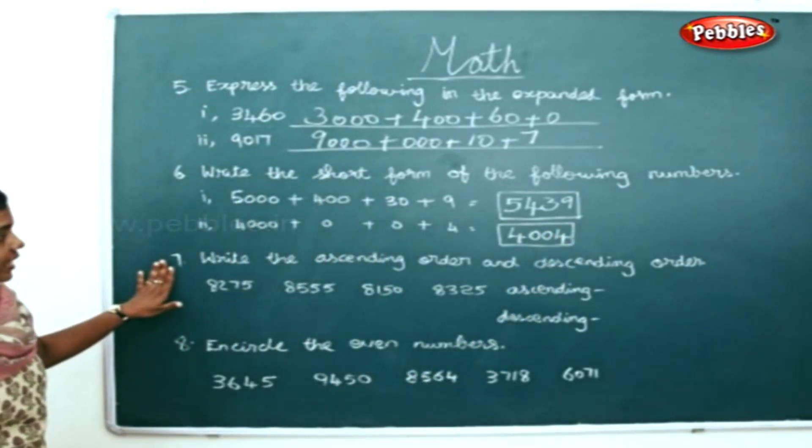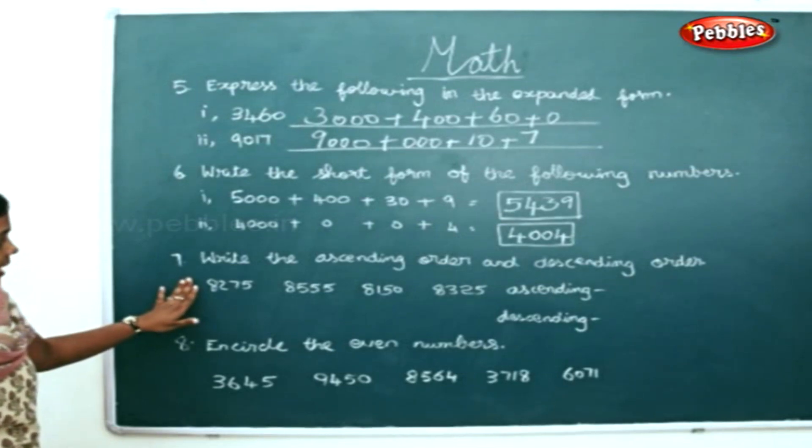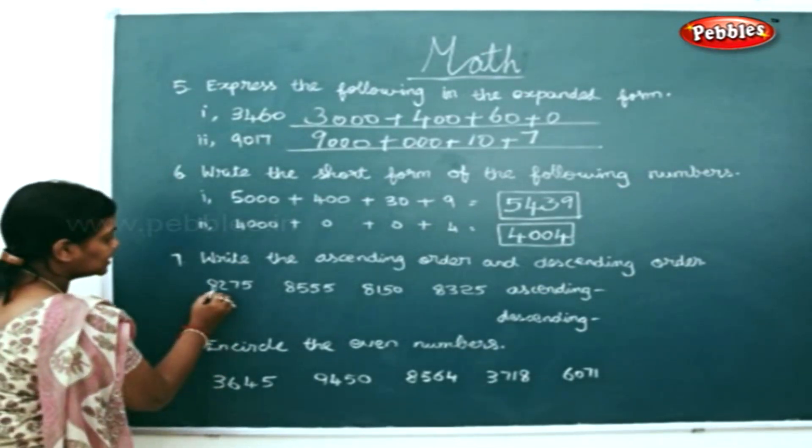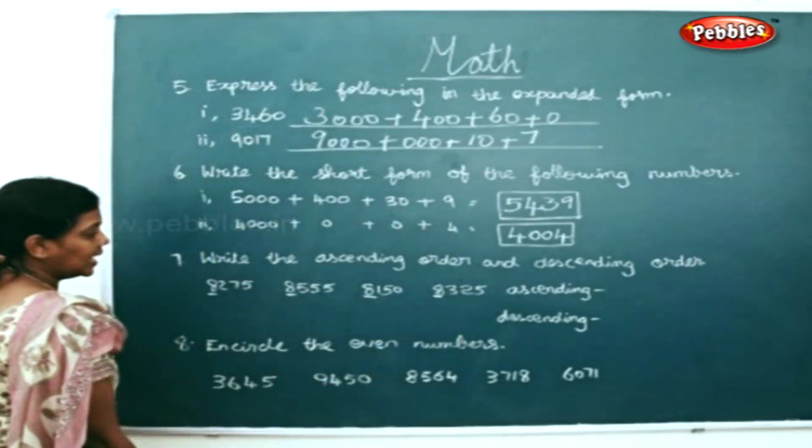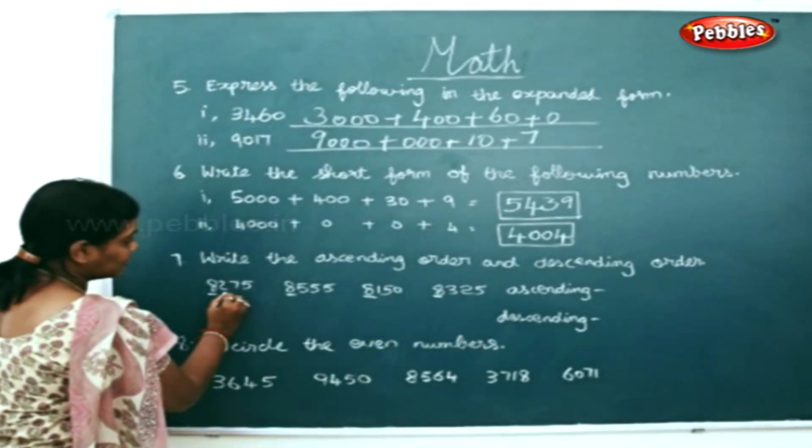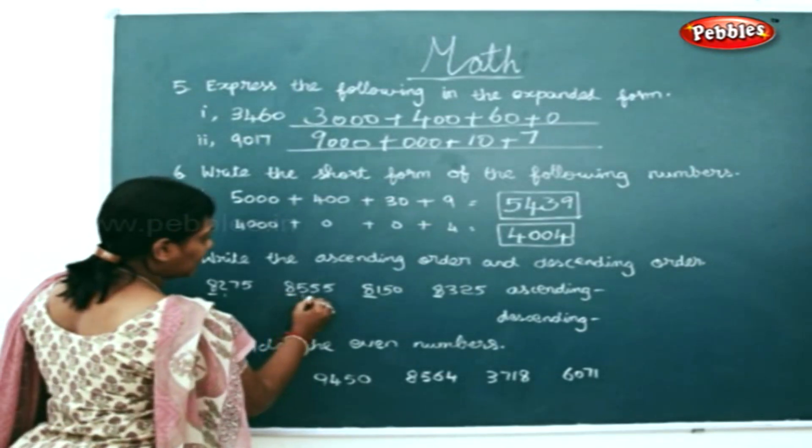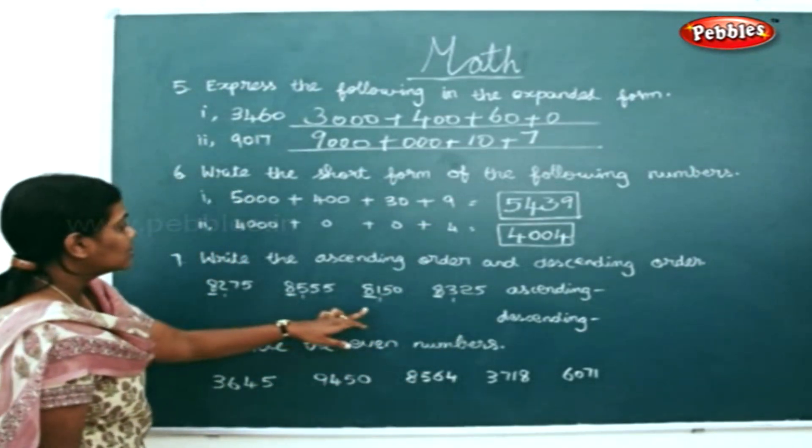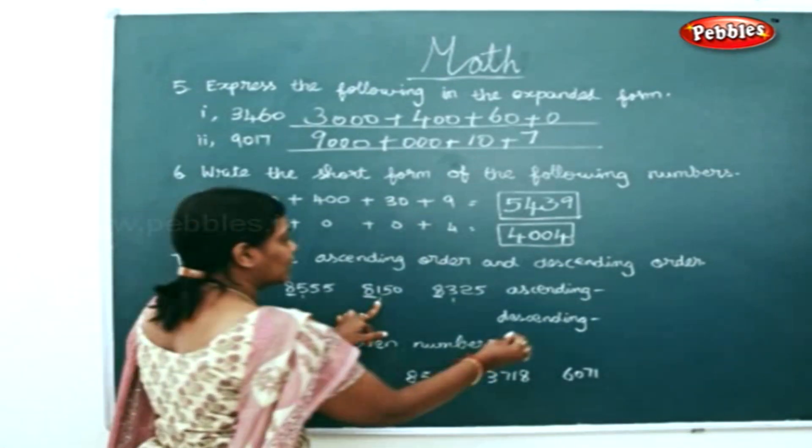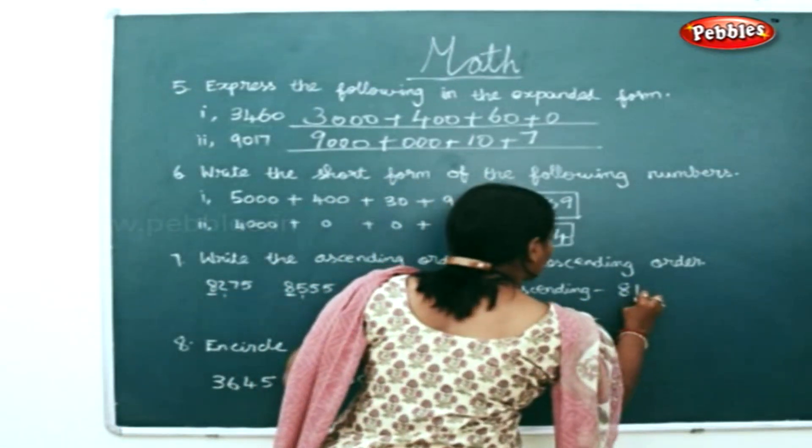Now write the ascending order and descending order for the given numbers. First check the thousands place - you have 8. Next check the hundreds place - you have 2, 5, 1, 3. Which is the smallest? 1 is the smallest, so we will write 8150.